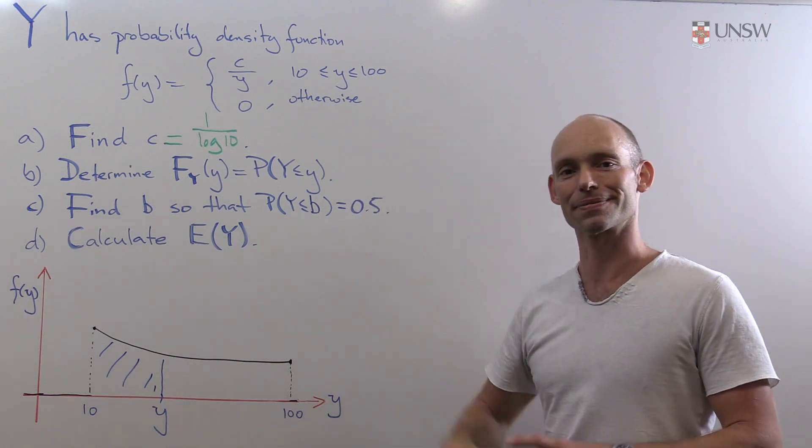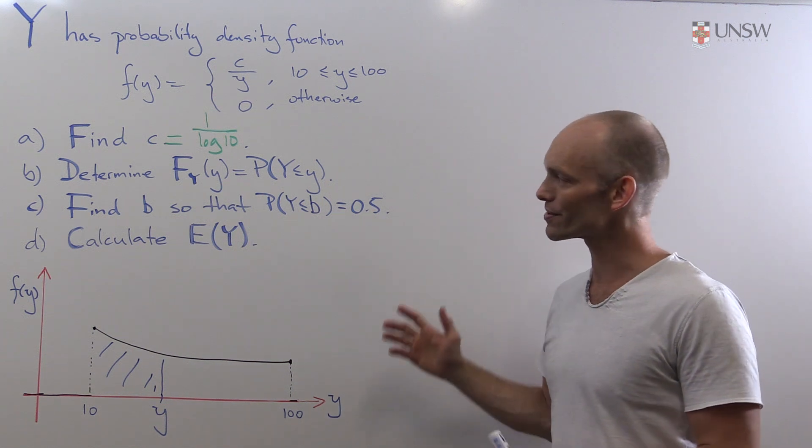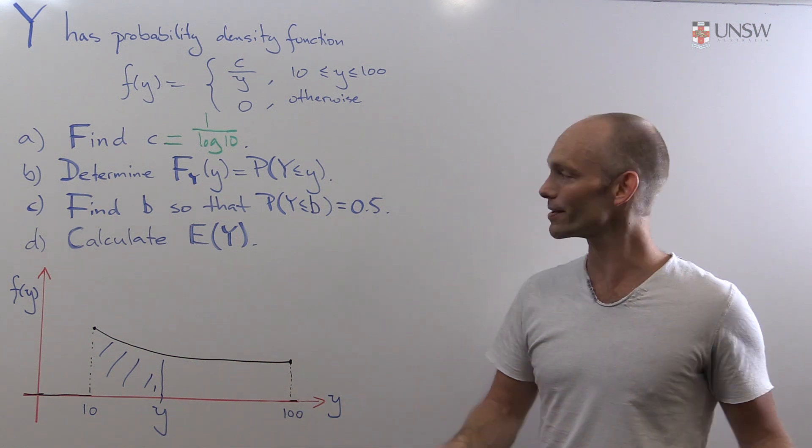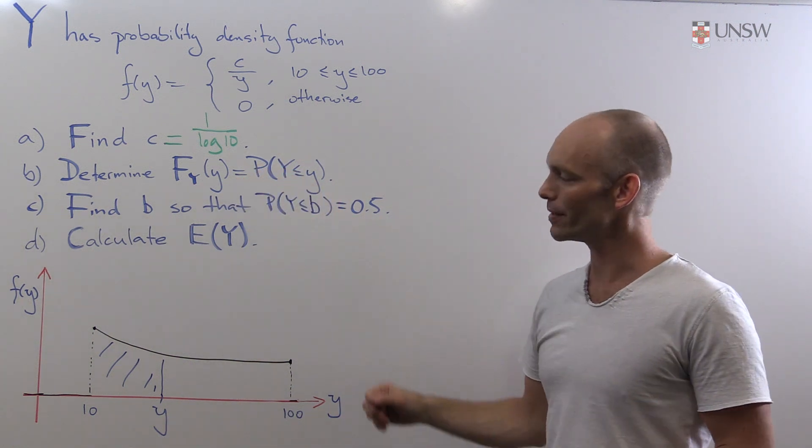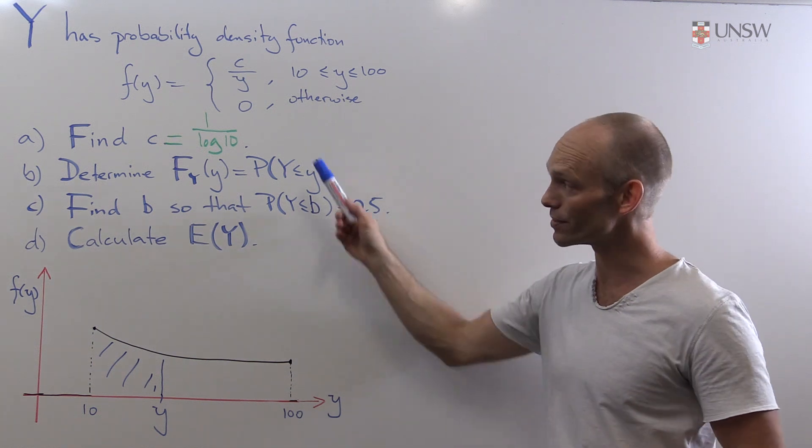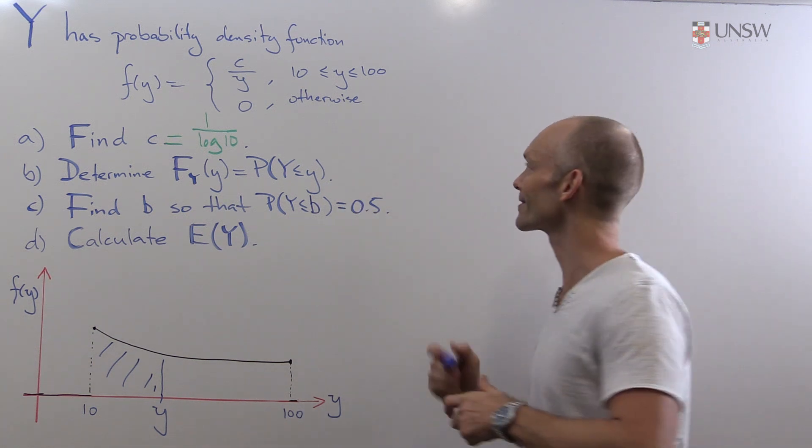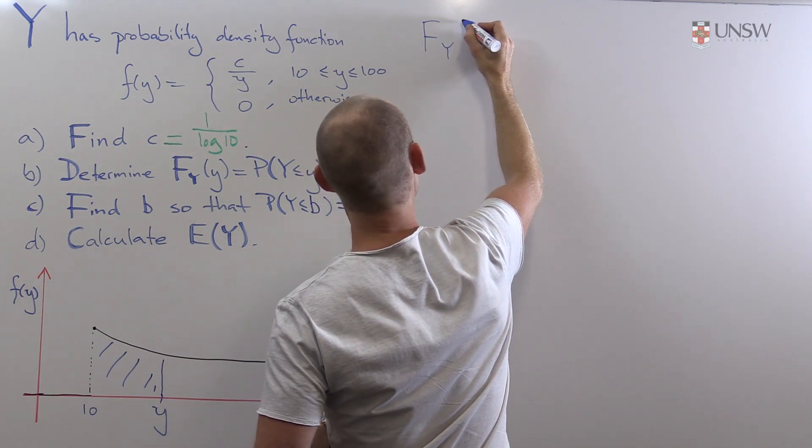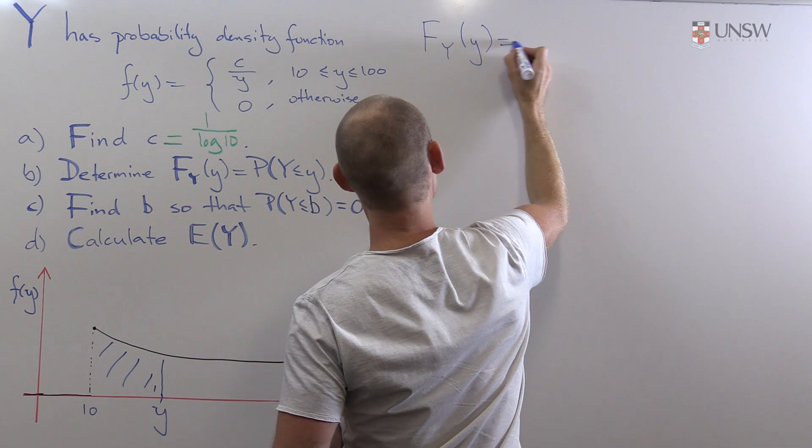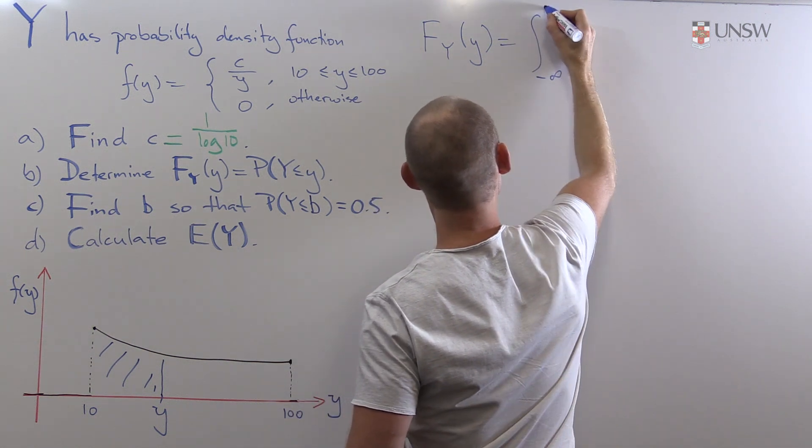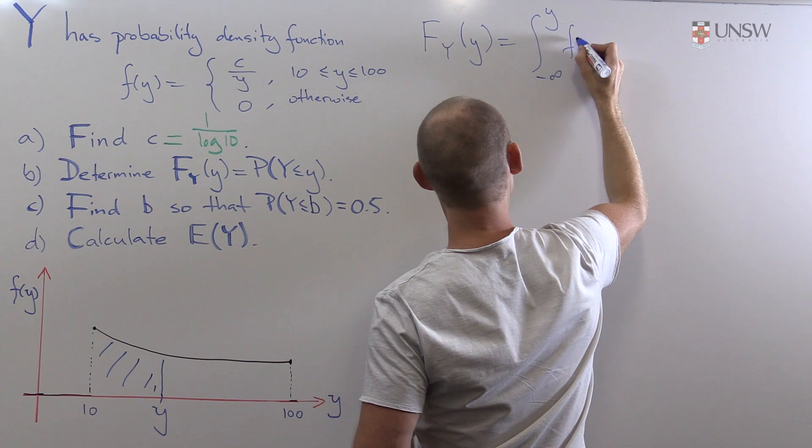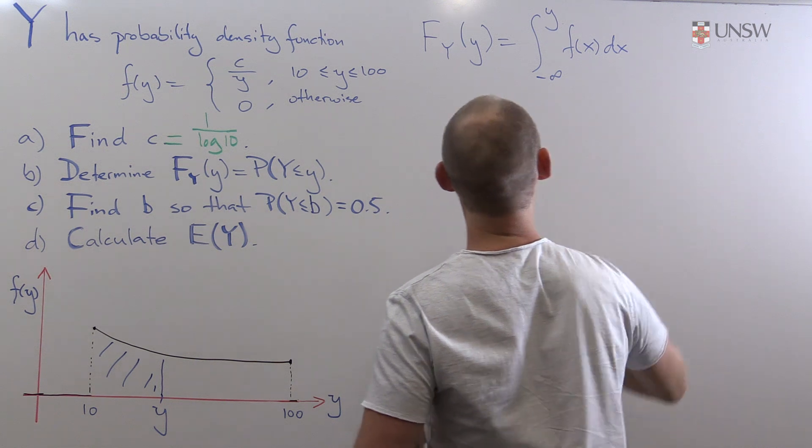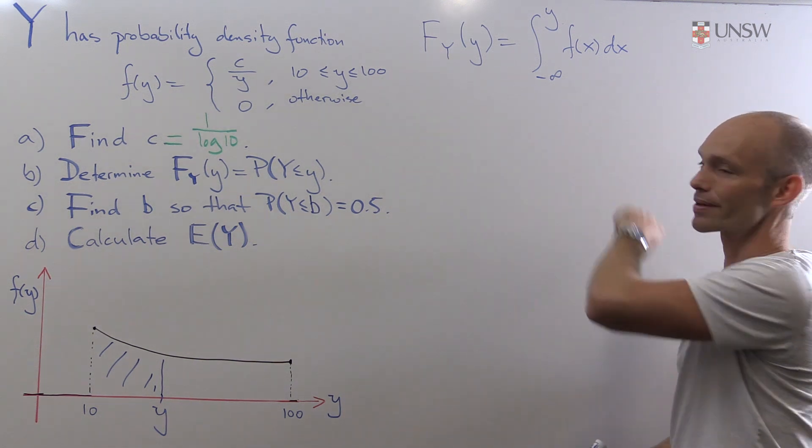So now let's actually find this function. We do that in very much the same way that we would in the discrete case. We add up all the probability from minus infinity up to y. But now we're adding by taking an integral, just like we did for part a. So we have this capital F of y is equal to the integral from minus infinity to y of the density function. And now let's use a different variable x, so as not to confuse.